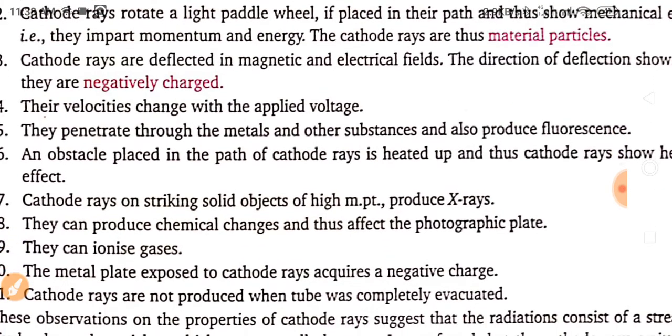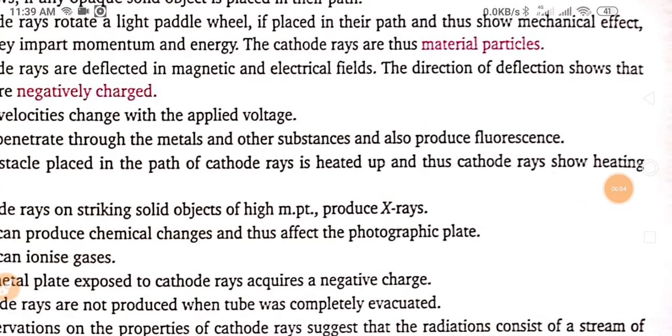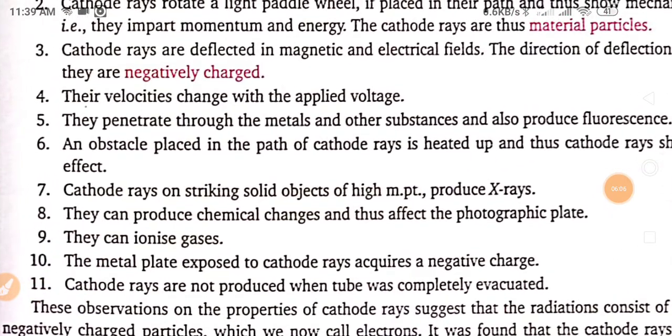Cathode rays are deflected in magnetic and electrical fields. The direction of deflections show that they are negatively charged because they always move from cathode which is negatively charged.